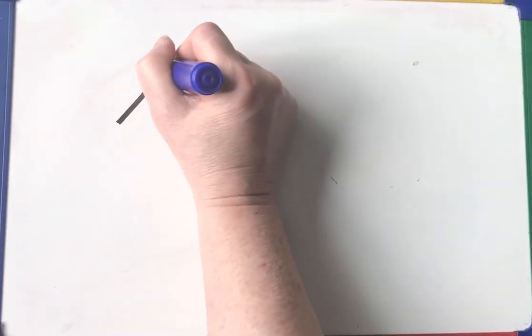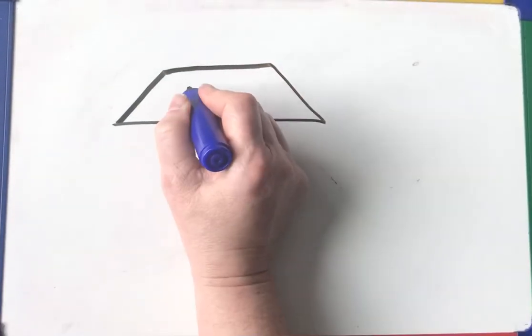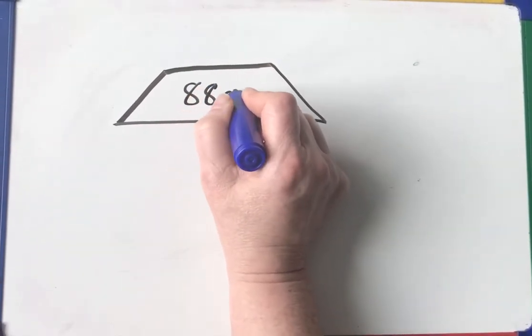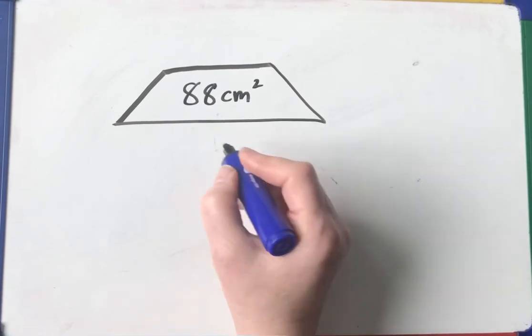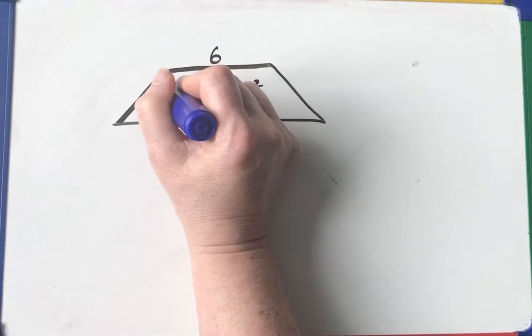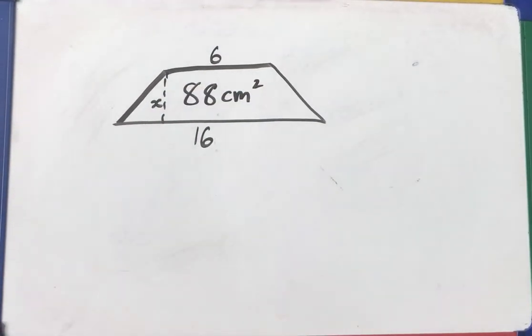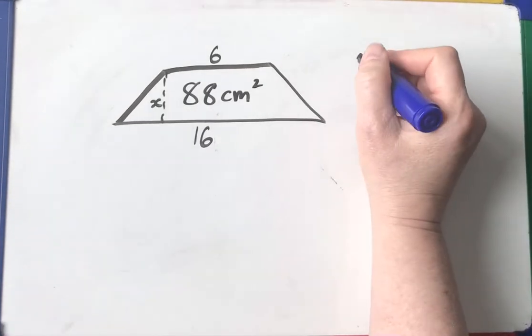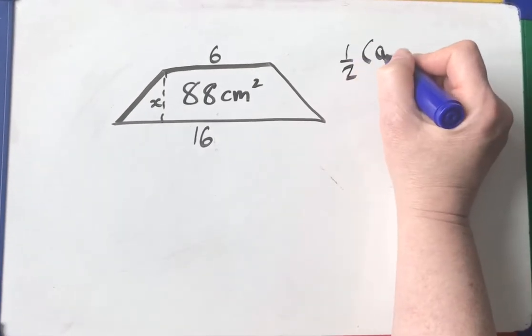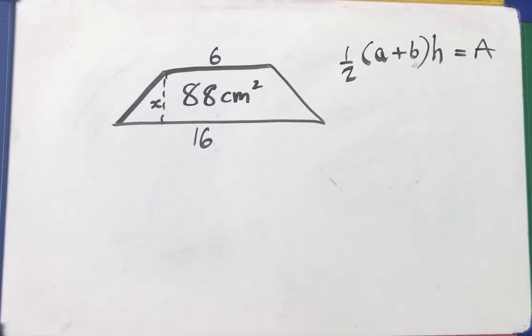Let's do another one. Here's an isosceles trapezium. Again, I'm sorry about the quality of my drawings. The area is 88 centimeters squared. The lengths are 16 and 6 and we want to know the height, the distance between them. So I'll do one more. Half the sum of the parallel sides times the space between them. That is how we calculate the area of a trapezium. So let's have a look.